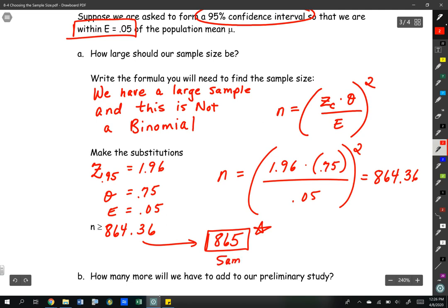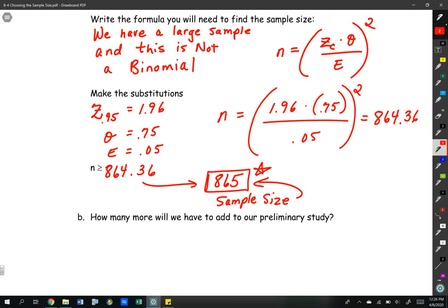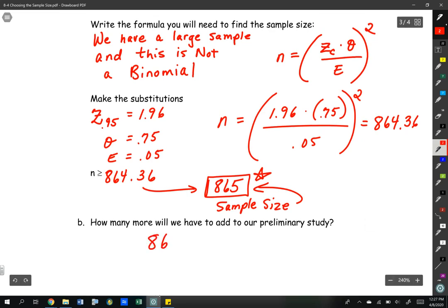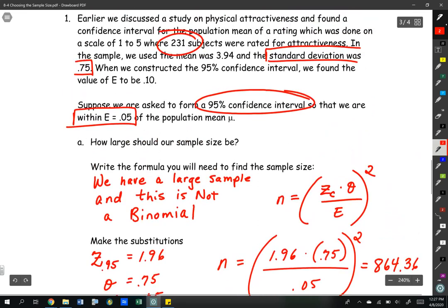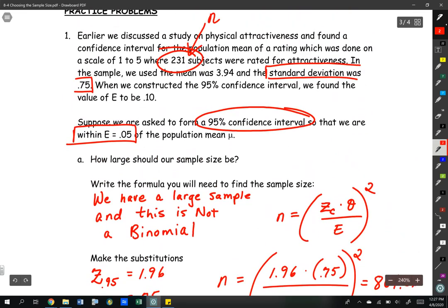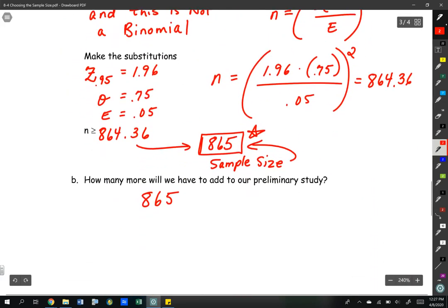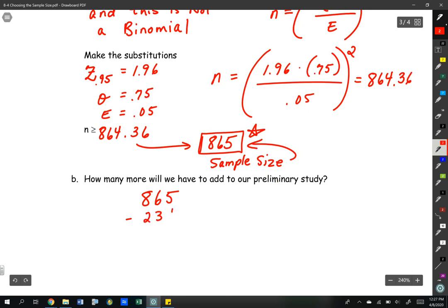So we need a sample size of at least 865 people in order to meet the requirement for a 95% confidence interval within 0.05 of the population mean. How many more will we have to add to our preliminary study? We know we need 865. Our preliminary study said that we used 231 original people, so we're going to subtract 231. That's going to give us 634 more people needed in the sample.